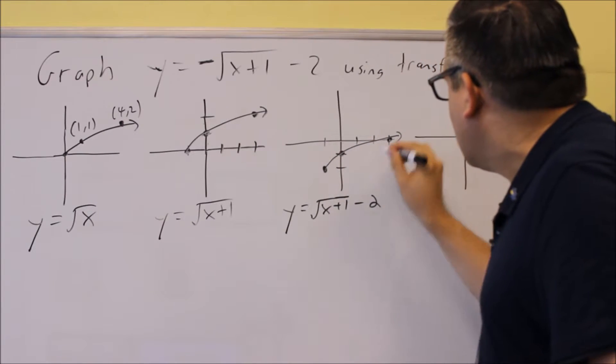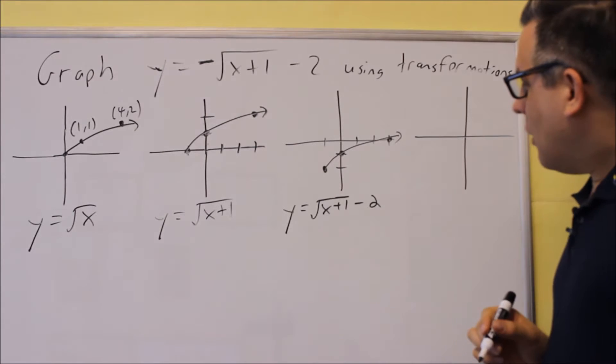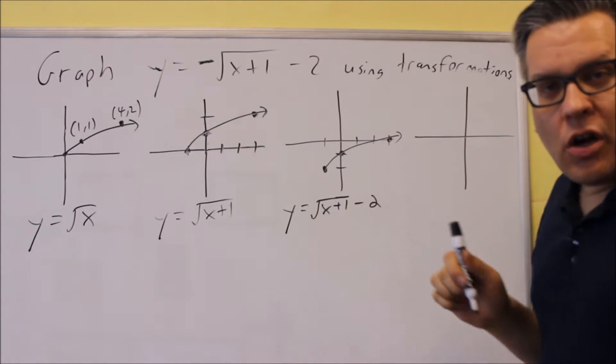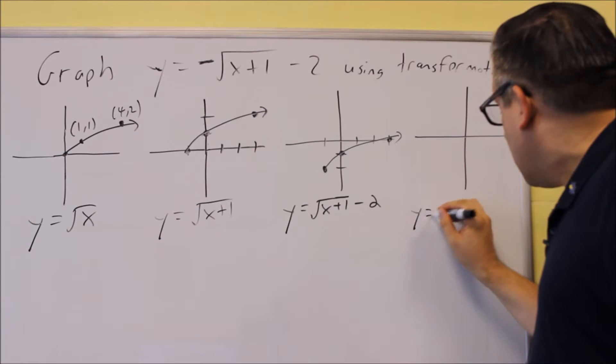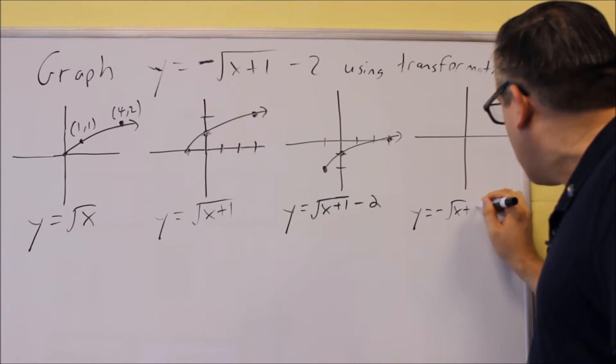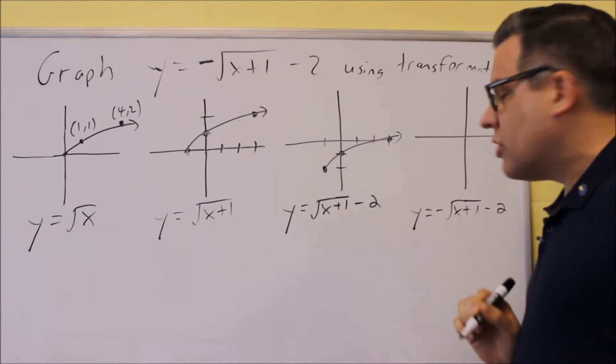Now the graph looks like this. The very last one is going to be our answer, and that's where we apply the negative sign outside. So we do negative square root x plus 1 minus 2 is the one we're going to do now.